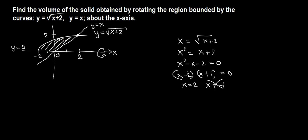On the right part, from 0 to 2, a sample slice when rotated about the x-axis gives a washer — hollow inside. On the left part, from negative 2 to 0, a sample slice when rotated about the x-axis gives a disk — there is no hollow inside.